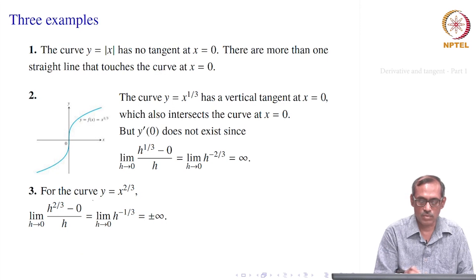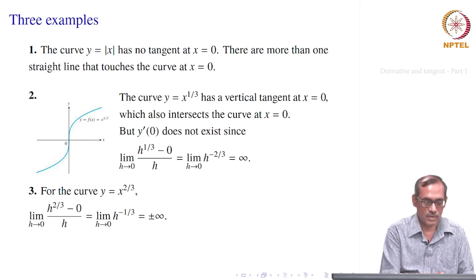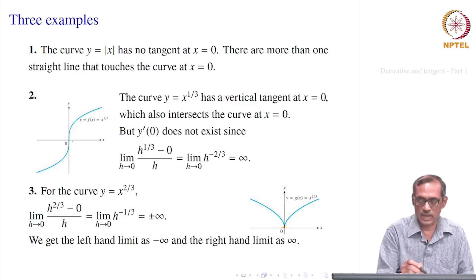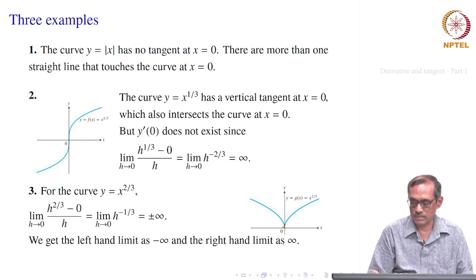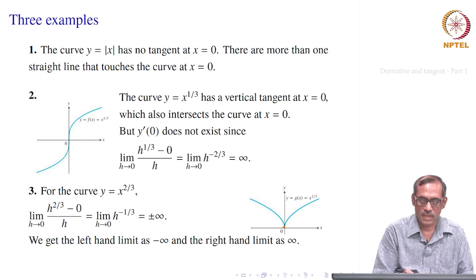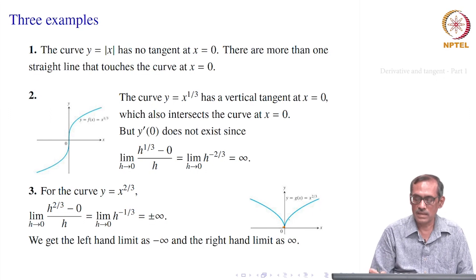Consider another example: y = x^(2/3). Its graph has a cusp — it comes down to the origin and then goes up. When you compute the derivative at 0: [f(0 + h) − f(0)] / h = h^(2/3) / h = h^(−1/3). When h is positive the limit is +∞, and from the left side as h → 0⁻ you get −∞. So the left and right limits are ±∞, and the curve is not differentiable at x = 0.